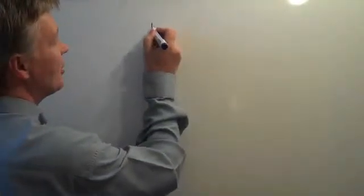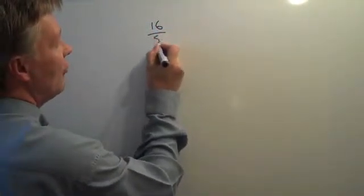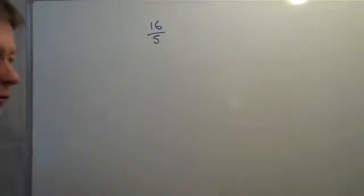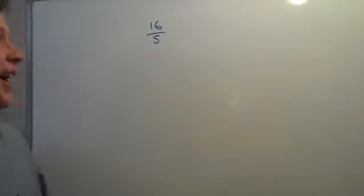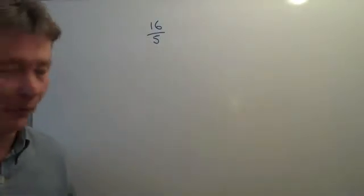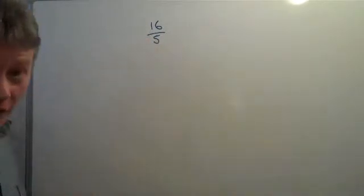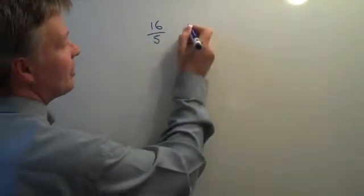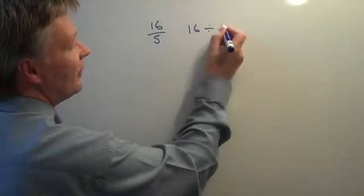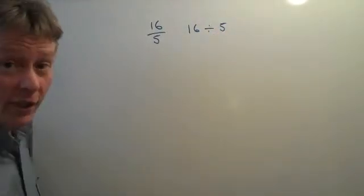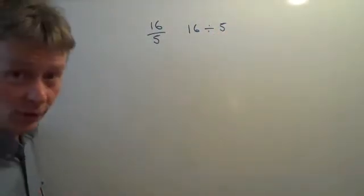So what we said before in the previous video is that when we're converting a fraction, let's say this particular fraction is going to be 16 over 5, which is really quite a difficult, odd, improper fraction to deal with. And we want to convert that to a decimal. So what we do is we recognize that 16 over 5 is the same as saying 16 divided by 5, and we can rewrite that as short division.